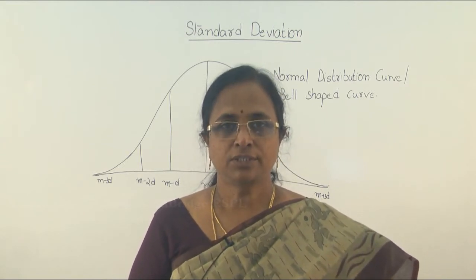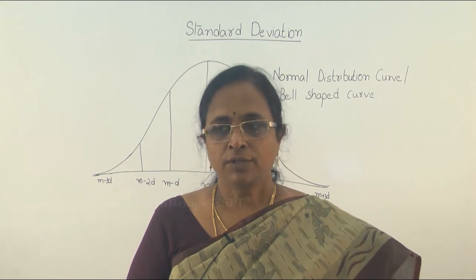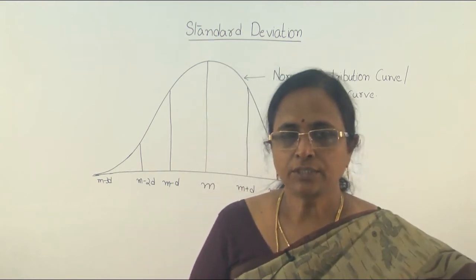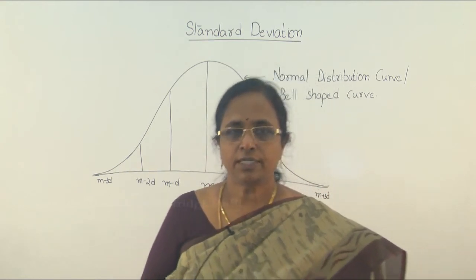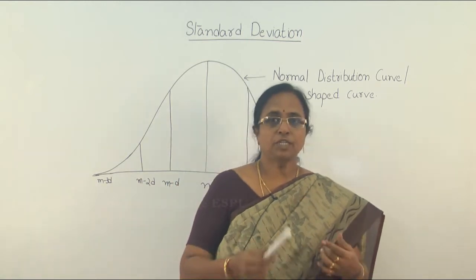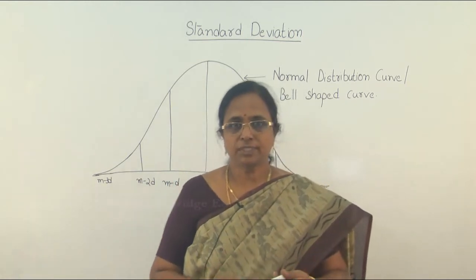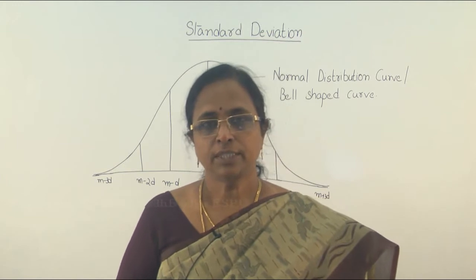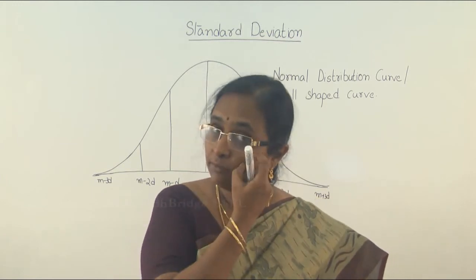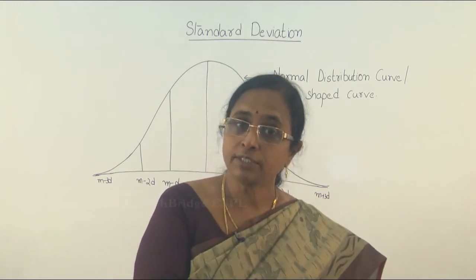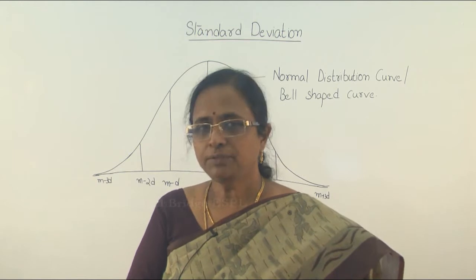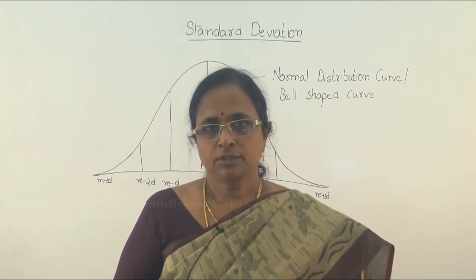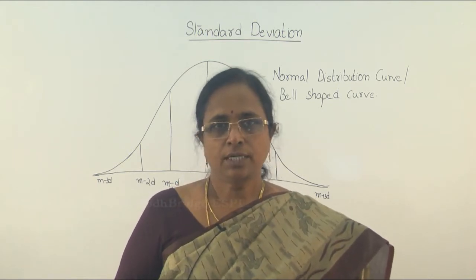What is mean? Average. When you have around 10 data points, each having different values, each value cannot be referred to separately. In order to represent the entire data, we find out one particular value which is the average — and the average is nothing but the total sum of the values divided by the quantity. This is the average.